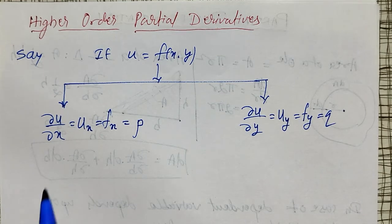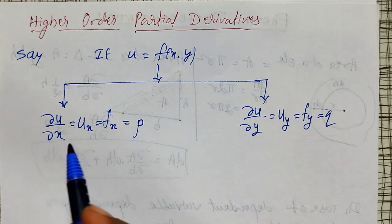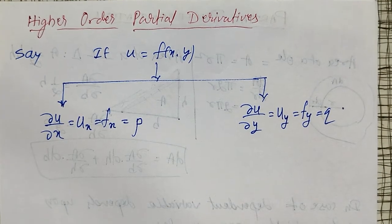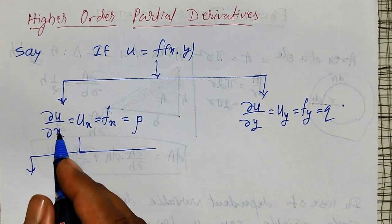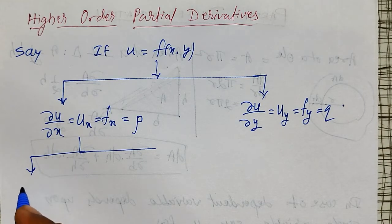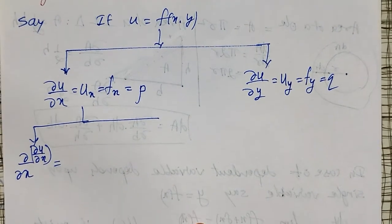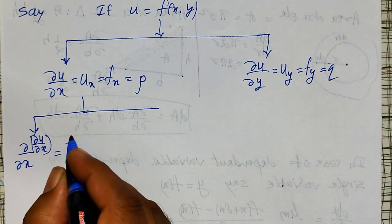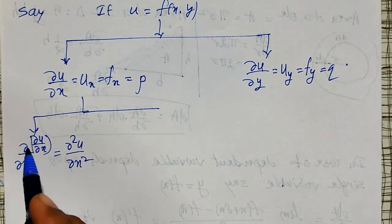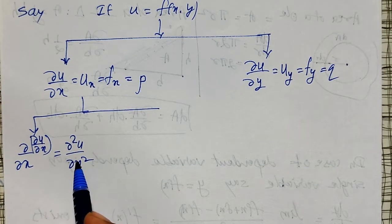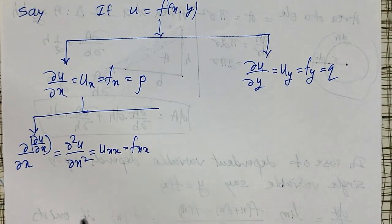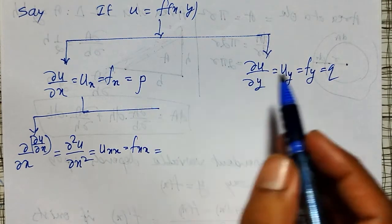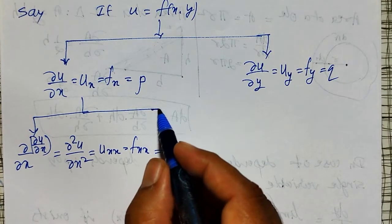Now, ∂u/∂x may itself be a function of x and y, so it can again be differentiated partially. Differentiating ∂u/∂x again with respect to x gives ∂/∂x of ∂u/∂x, which is written as ∂²u/∂x², pronounced as 'dou square u by dou x square'. The short notation is u_xx, or f_xx, and it is also denoted by r.